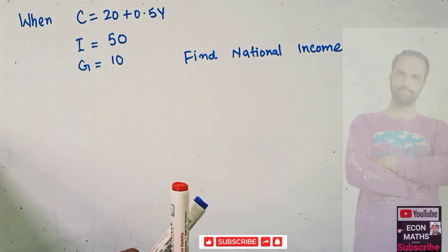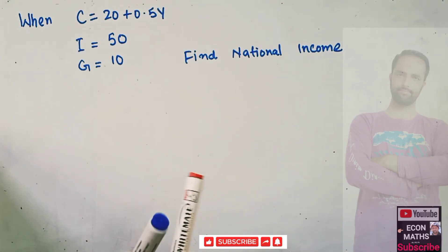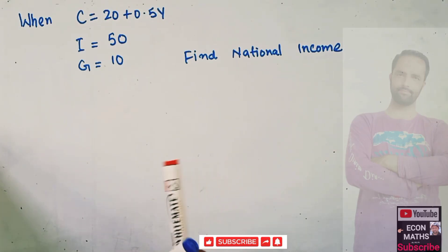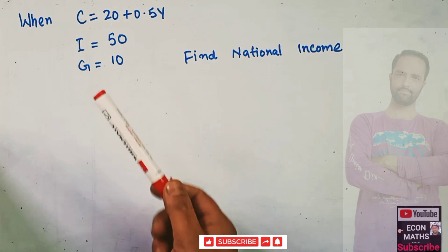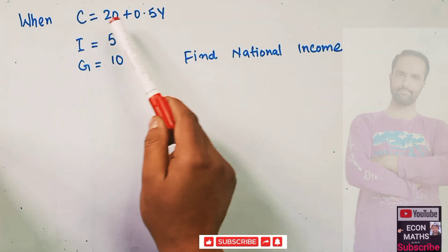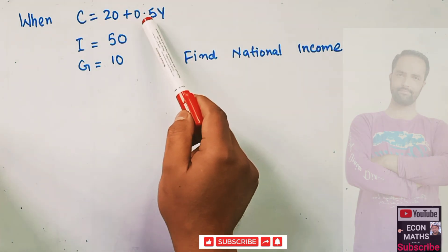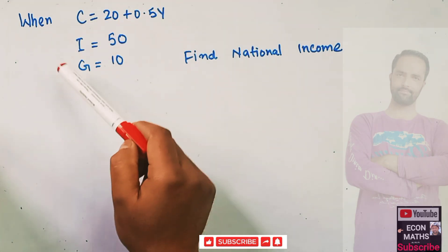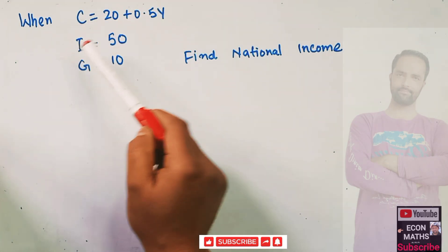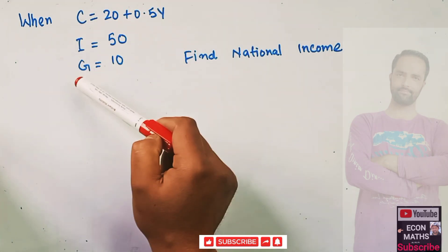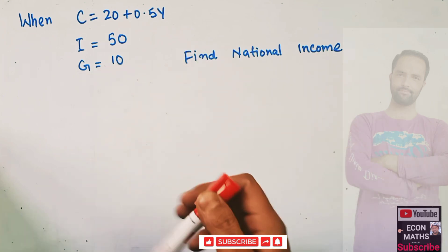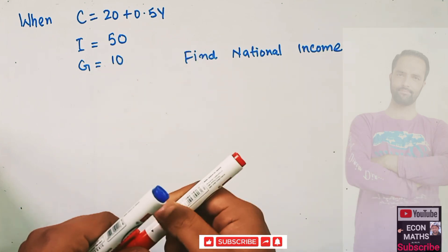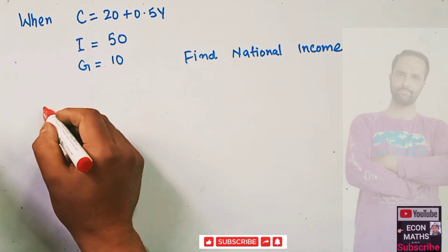Let us solve a question on the national income model. The question is: when consumption function is 20 plus 0.5Y, I is equal to 50, and G is equal to 10, find national income.